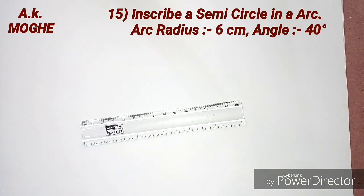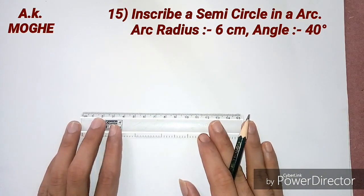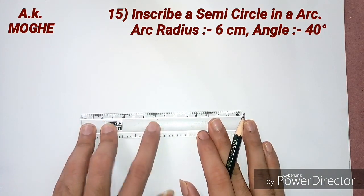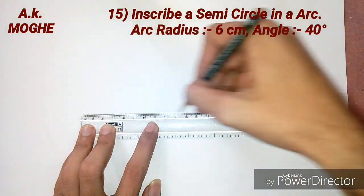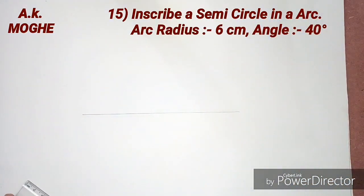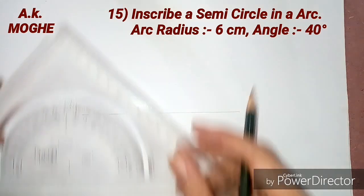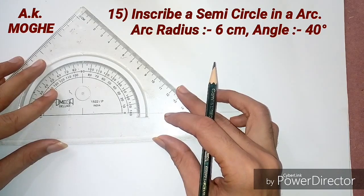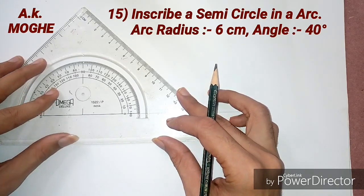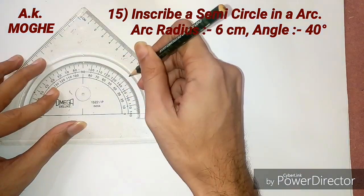Hello guys, welcome to the sixth lesson of the geometry class. It is problem number 15. In this problem we are discussing how to inscribe a semicircle into an arc with a radius 6 centimeters and angle of arc is 40 degrees. Here I am drawing an angle 40 degrees by using protractor.